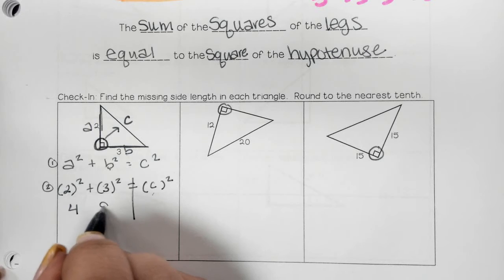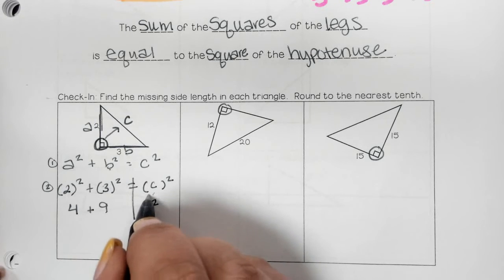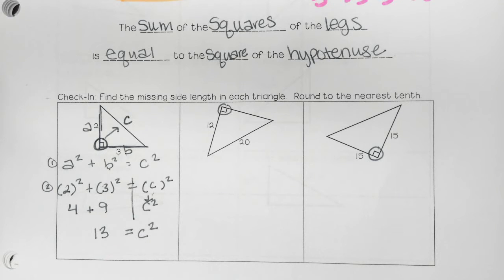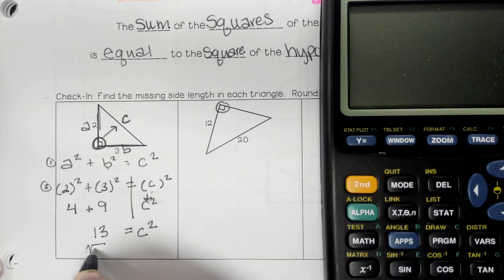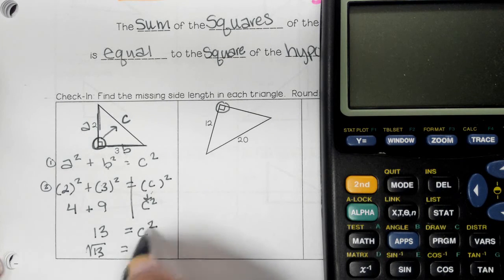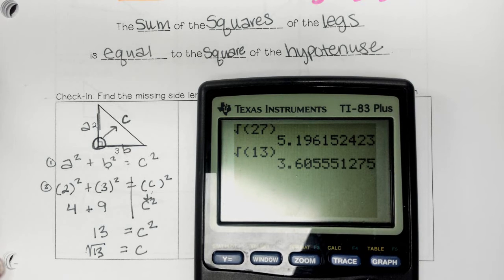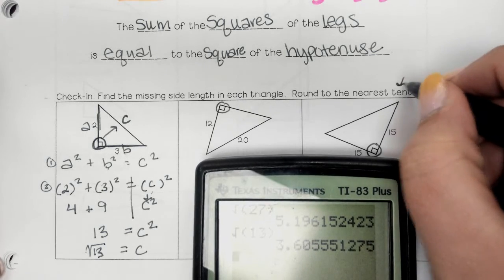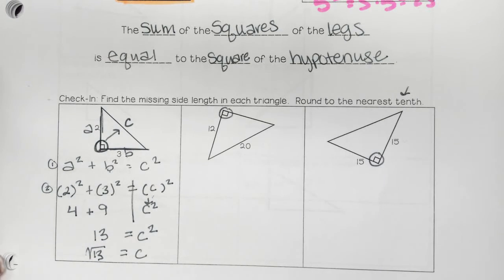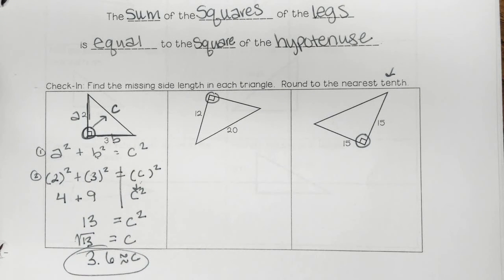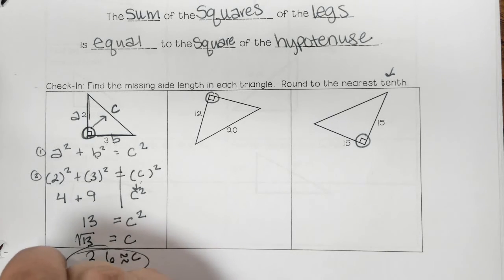a is 2, b is 3, and c is unknown. On the left: 2 squared is 4, and 3 squared is 9. c squared we drop down. 4 plus 9 is 13, so 13 equals c squared. To undo the square, we take the square root of 13. Using a calculator and rounding to the nearest tenth, c is approximately 3.6.